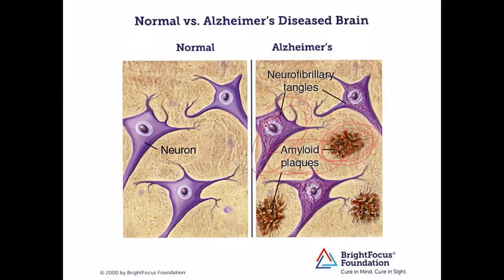Also, unclumped forms of beta-amyloid accumulation may also be problems. However, scientists are still not sure if these plaques are a byproduct or a cause of Alzheimer's disease.